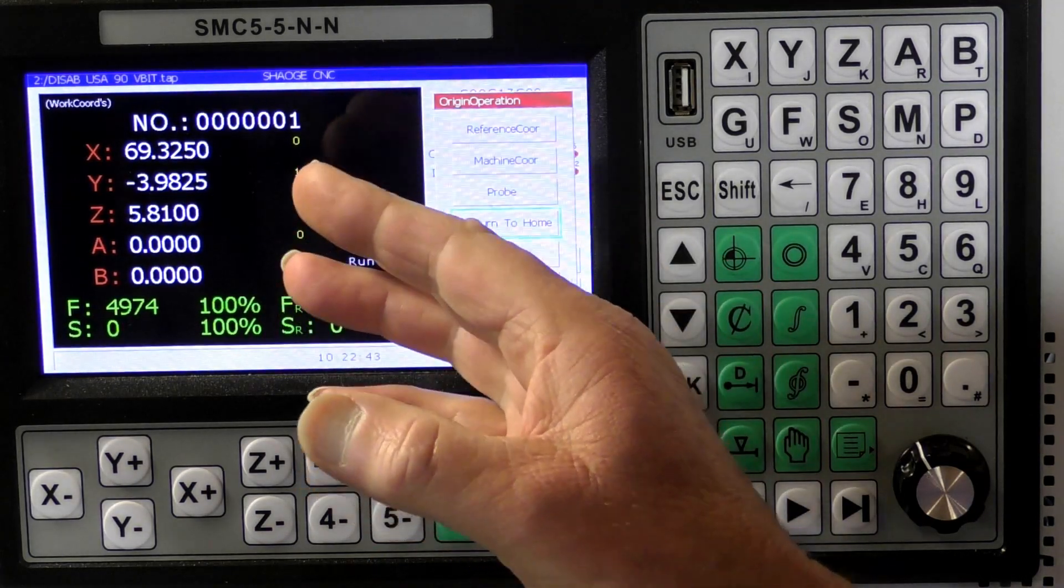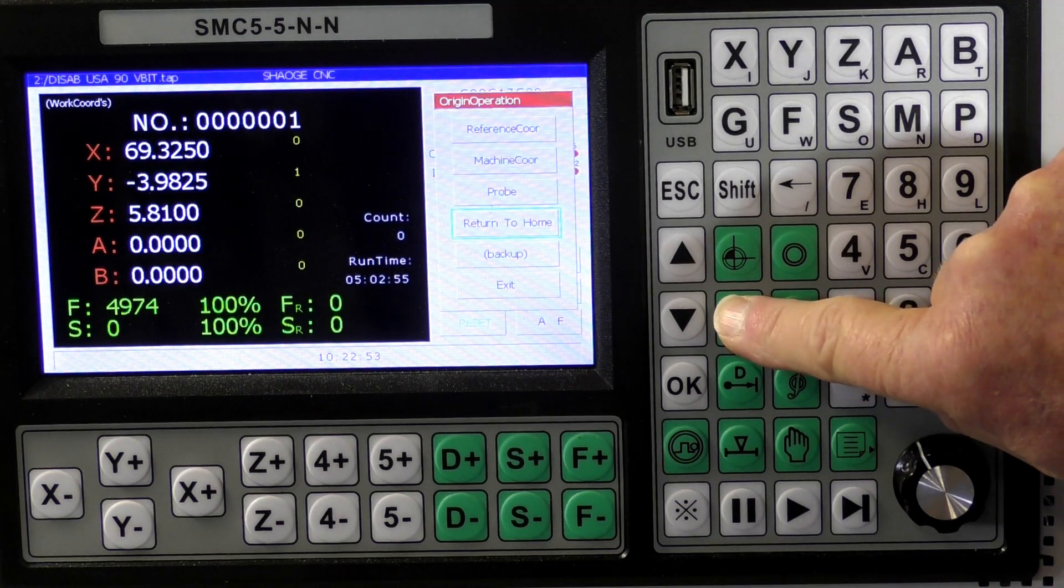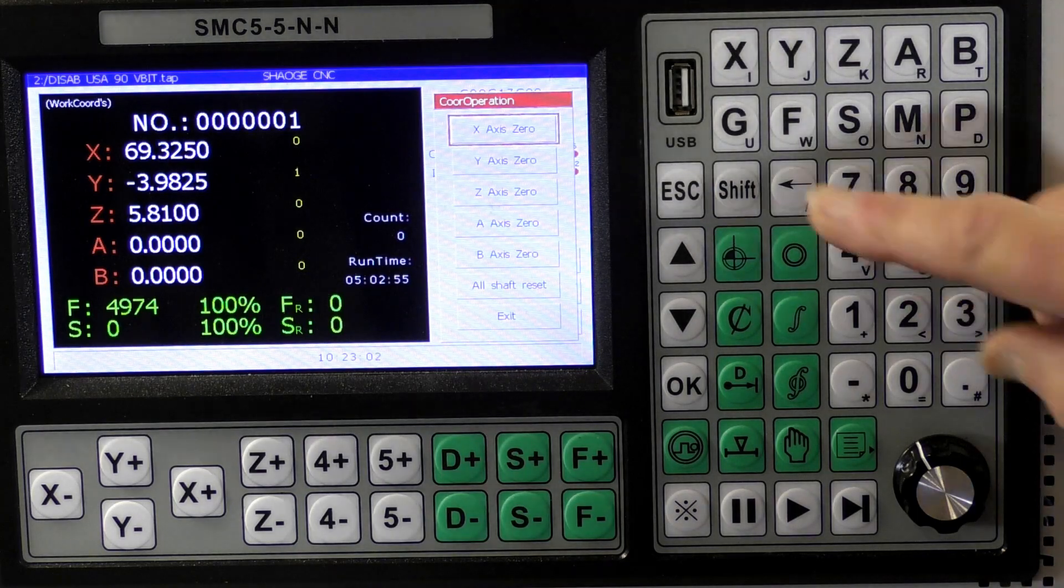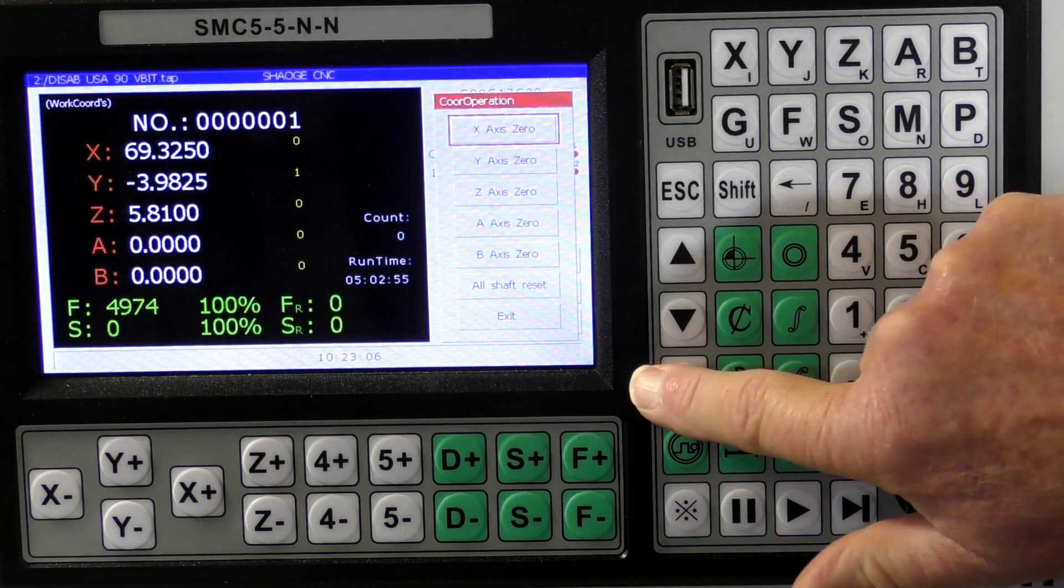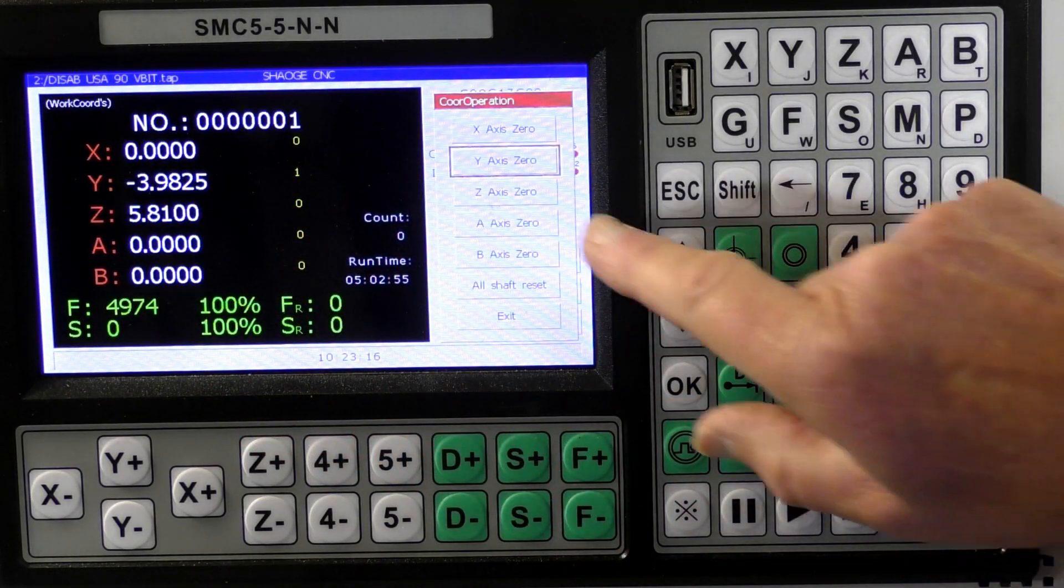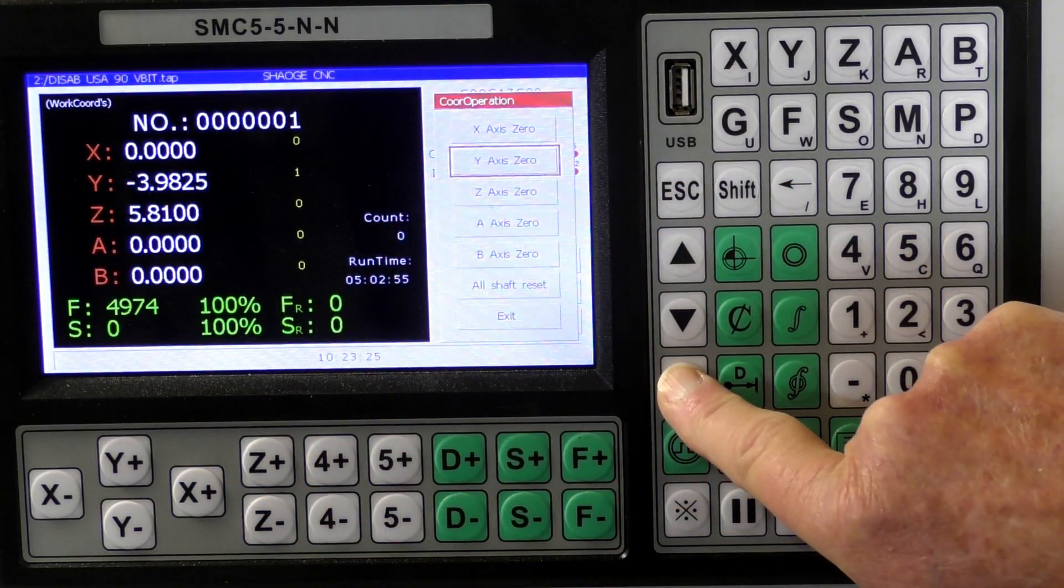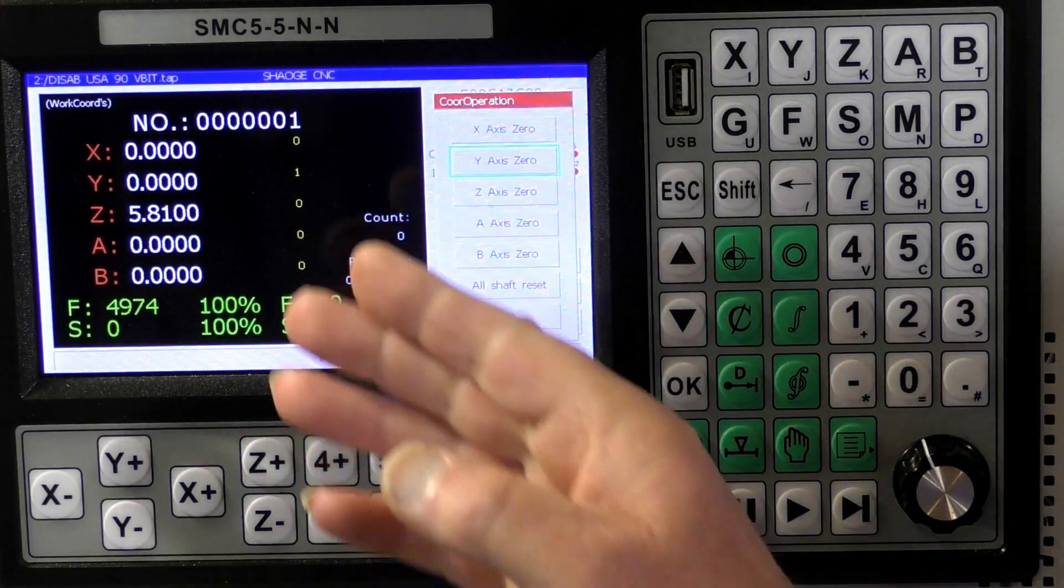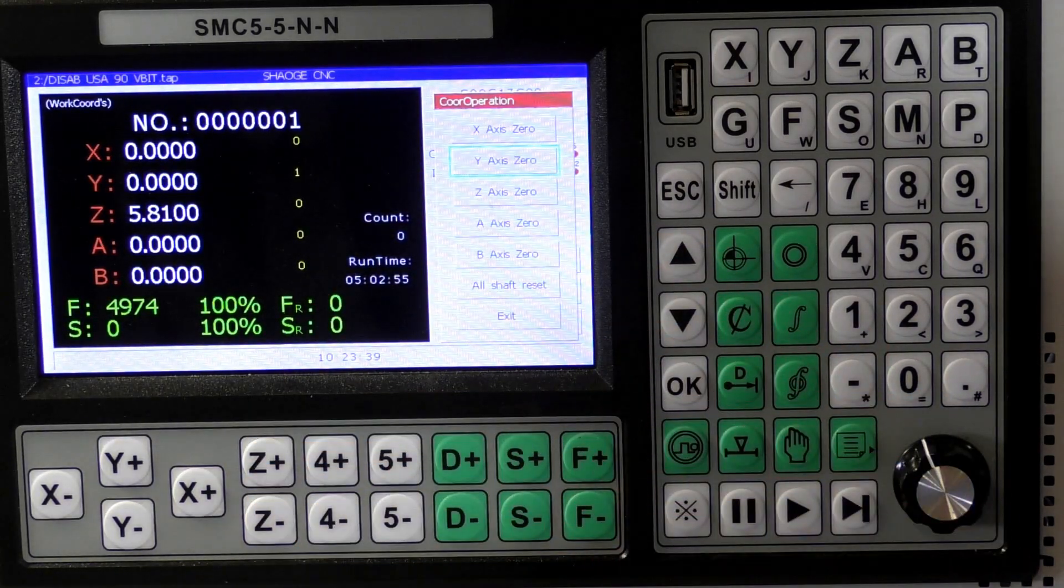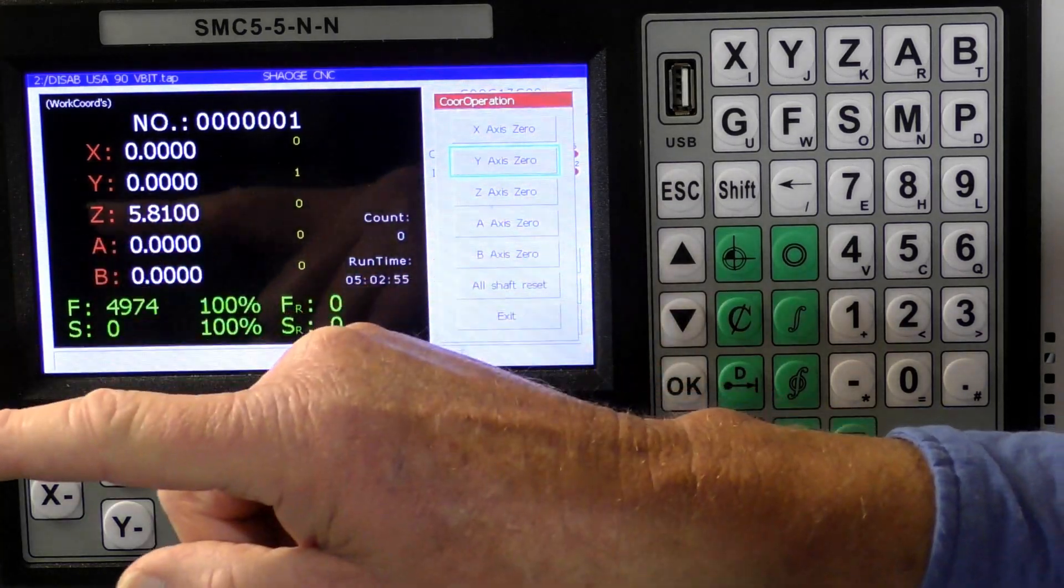To do that is simple. We want work coordinates, which is where the start of the program is. Press this button, so now we're in the individual axes, registering the individual axes. Now we're on the X so we can press OK and it's gone to zero. That's X zero. We just move this down to Y. It's red, indicating it's not been changed. Here we go. Press OK and it's gone to zero. So we have zeroed the X and Y coordinates for that job. Next thing we do now is change the tool to the correct tool, which is going to be a half-inch router bit, and we will zero the end of the tool in relation to the work with the Z.